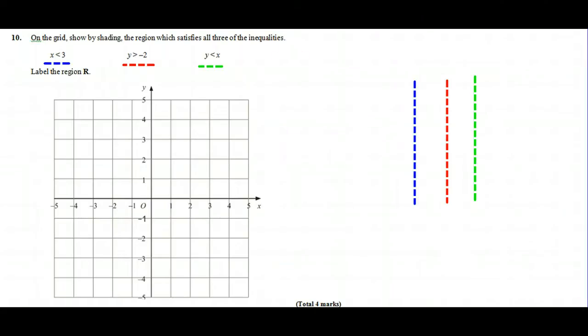So what we're going to be doing is looking to plot those and then decide which region satisfies all three. I'm going to start with x is less than 3. Now, if I was looking at x equals 3, then the first point I'd start with is everywhere that has an x-coordinate of 3.